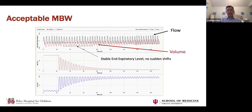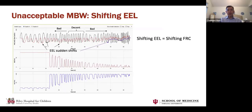An example of acceptable MBW — probably done by an adult volunteer — shows every breath very even with a stable end-expiratory level, confirming you're at the same FRC, with stable flow and volume. The nitrogen falls just as expected and there are many breaths around 2.5%, confirming the end of washout is truly met. An unacceptable example shows an unstable end-expiratory level, especially nearing the end, leading to wide variation in FRC. Since FRC is in the denominator of LCI, even a small change in FRC can markedly change your LCI.